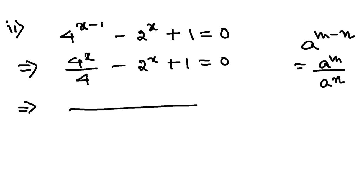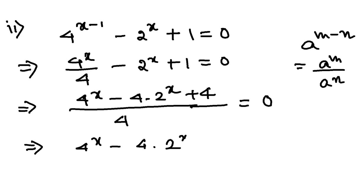Now I will take LCM 4. 4 to the power x minus 4 into 2 to the power x plus 1, plus 4 rather, equals 0. So this will give you 4 to the power x minus 4 into 2 to the power x plus 4 equals 4 into 0, which is 0.